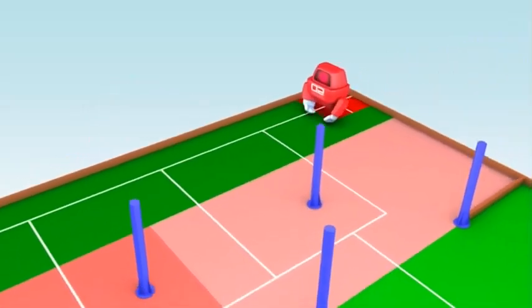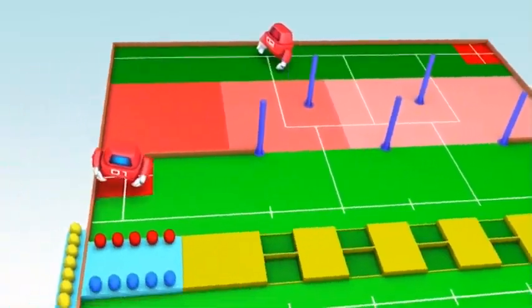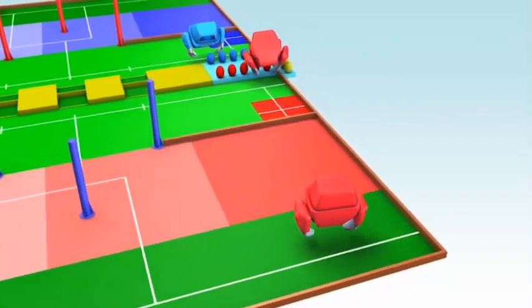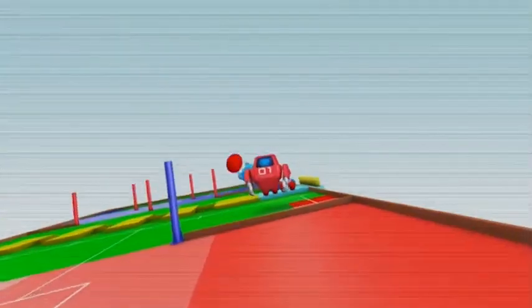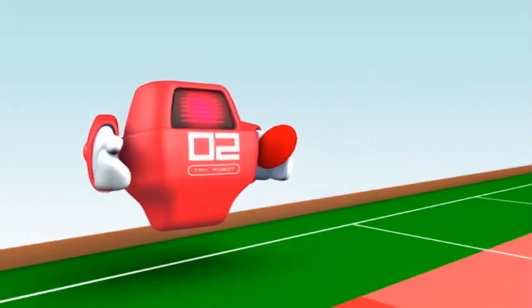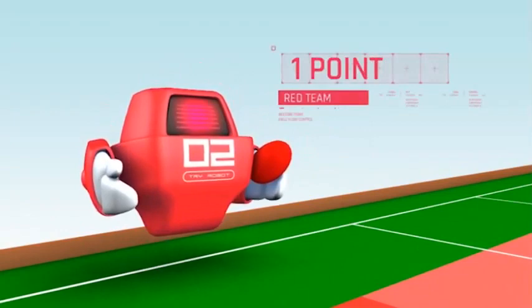The tri-robot starts from the tri-robot start zone and moves into the receiving zone to receive the tri-ball from the pass robot. The tri-robot receives the ball successfully from the pass robot: one point.